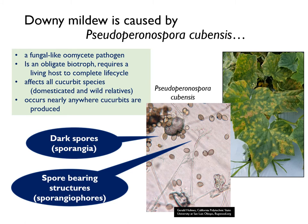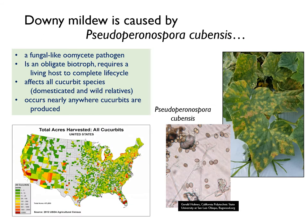P. cubensis produces unique lemon-shaped spores, often referred to as sporangia, on bifurcated spore-bearing structures, also called sporangiophores, that are key in making a proper diagnosis. P. cubensis is an obligate biotroph that requires a living cucurbit host to complete its life cycle.